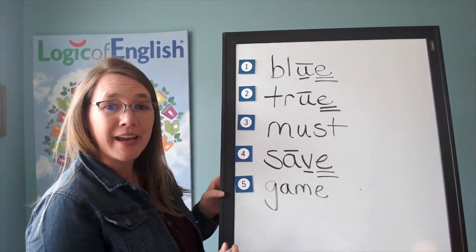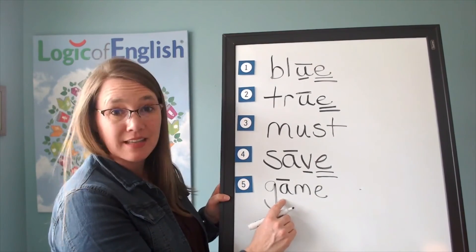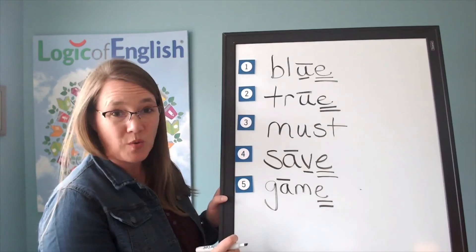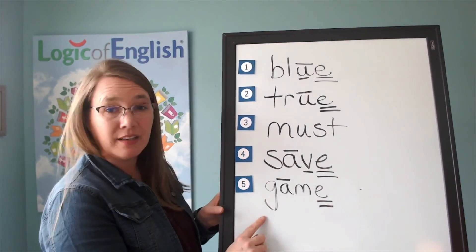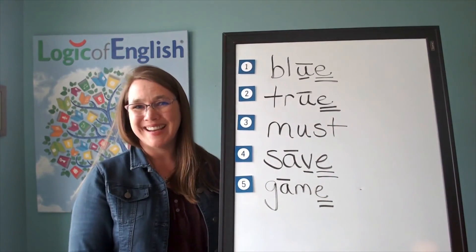How will we mark game? You're right. We'll put a line over the A to show that it's saying its long sound and we'll underline the silent final E twice. Let's read it. G-a-m. Game. Great work today.